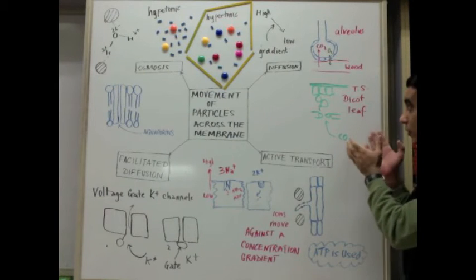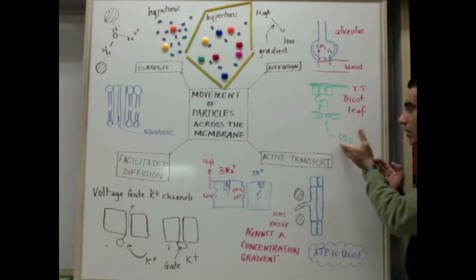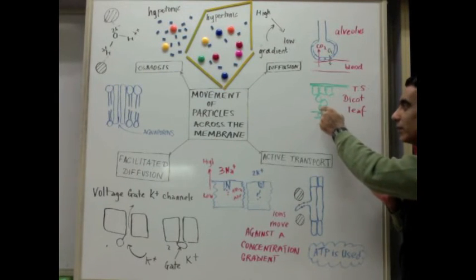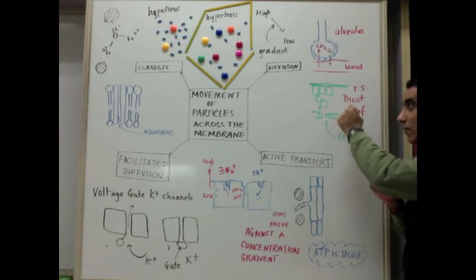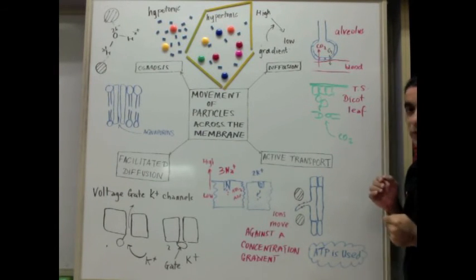Another example of diffusion is here in the dicot leaf, as carbon dioxide diffuses through the stomata, and it's able to fill up the air spaces inside of the leaf, and then diffuse across the cell membrane into the spongy mesophyll cell.